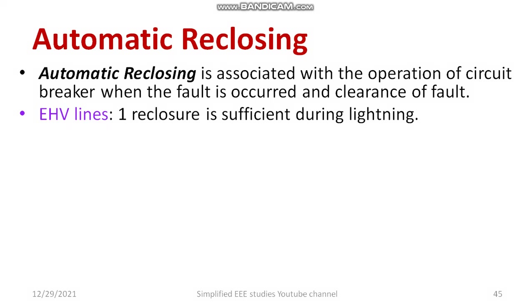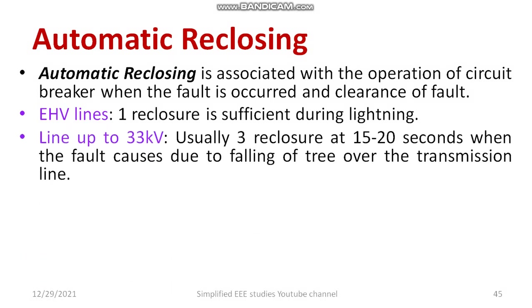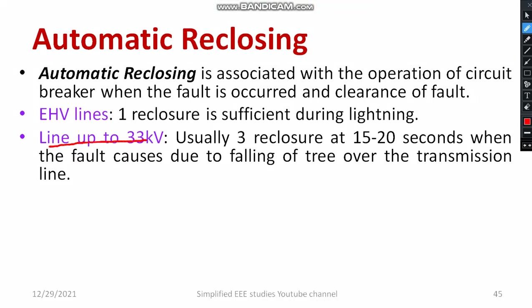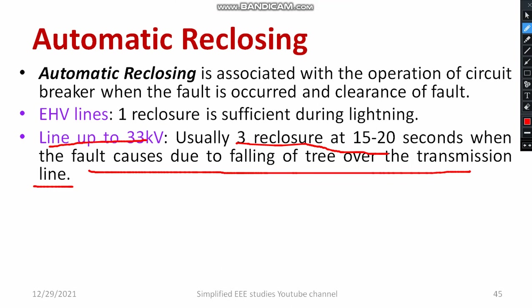It varies for different types of lines. For example, for lines up to 33 kV, normally 3 re-closures in the range of 15 to 20 seconds are required. Suppose when a tree falls over the transmission line, there are chances for a line-to-line fault, then line-to-ground fault, etc. To clear the fault, at least a minimum of 3 re-closures in the range of 15 to 20 seconds are necessary for lines up to 33 kV.